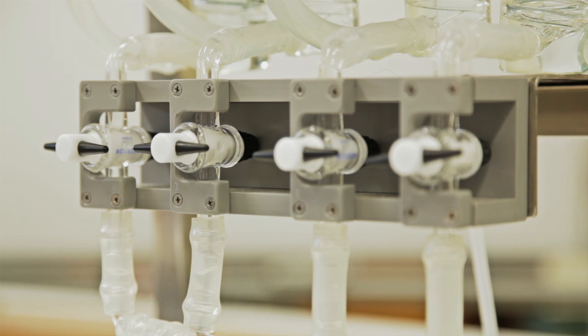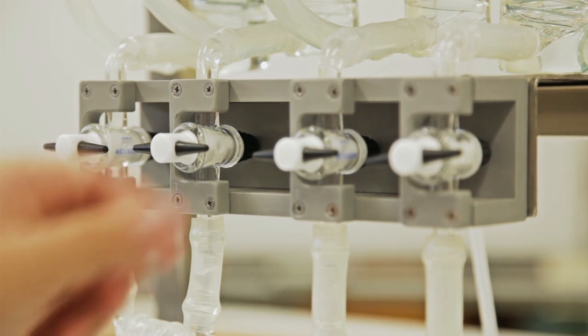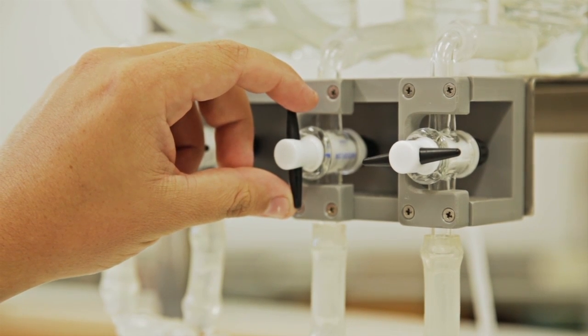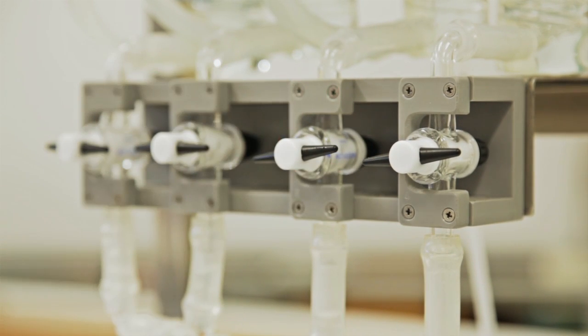The flow of the buffers into the organ bath are regulated by taps. Opening the tap allows a specific buffer to flow into the organ bath. The organ bath is also aerated with carbagen.